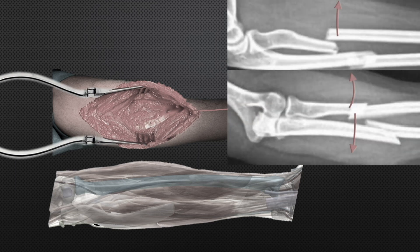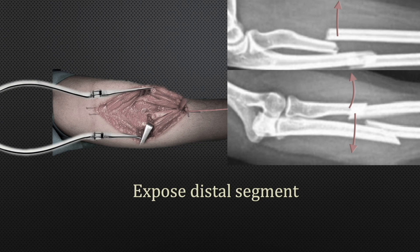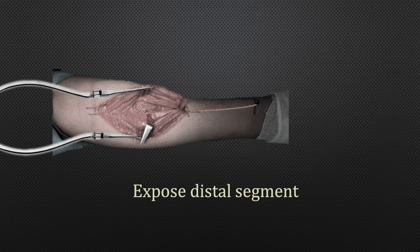Now you can see the pronator teres and its insertion on the radius. The pronator teres pulls the distal fragment medially and pronates it, so the distal fragment lies more medial and anterior compared to its original position. The proximal fragment lies more laterally due to the pull of the supinator muscle. We now release the insertion of the pronator teres from the distal fragment to expose it, allowing you to clearly see the distal fragment, while the proximal fragment lies nearby — just gently feel for the bone and clean over it.